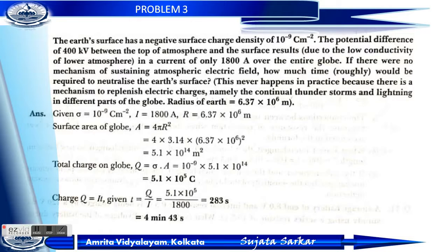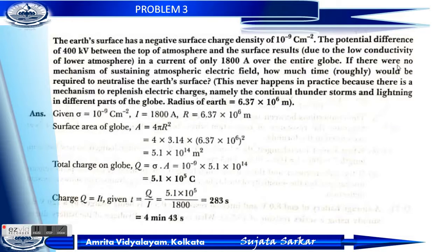Problem 3: The earth's surface has a negative surface charge density of 10 to the power minus 9 coulomb per meter square. The potential difference of 400 kV between the top of the atmosphere and the surface results in a current of only 1800 ampere over the entire globe.